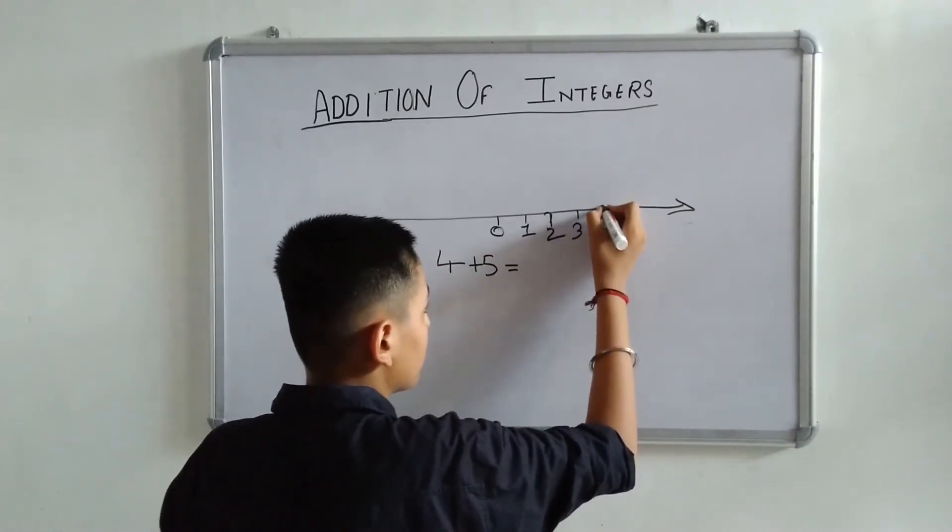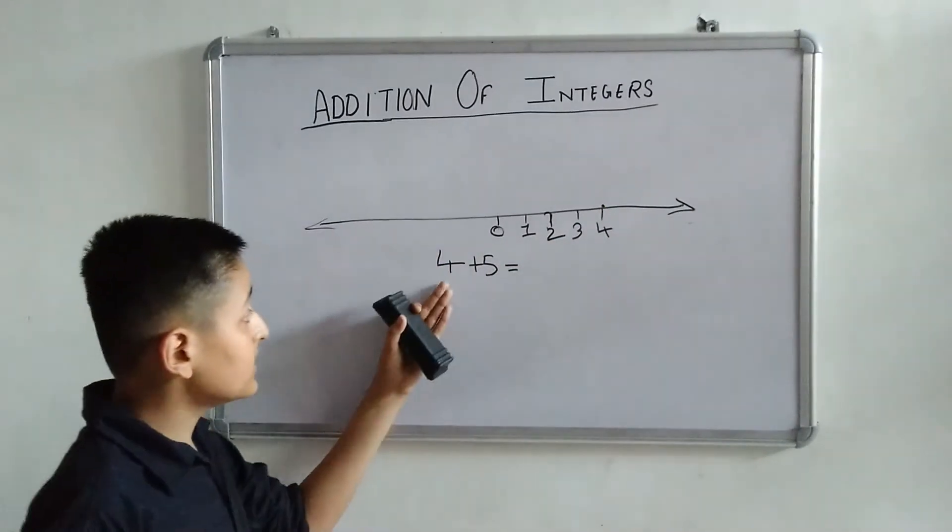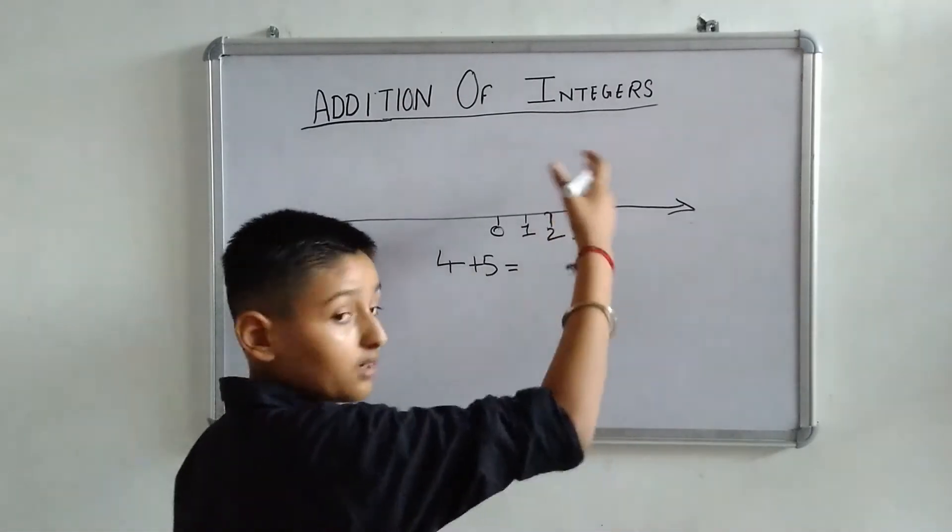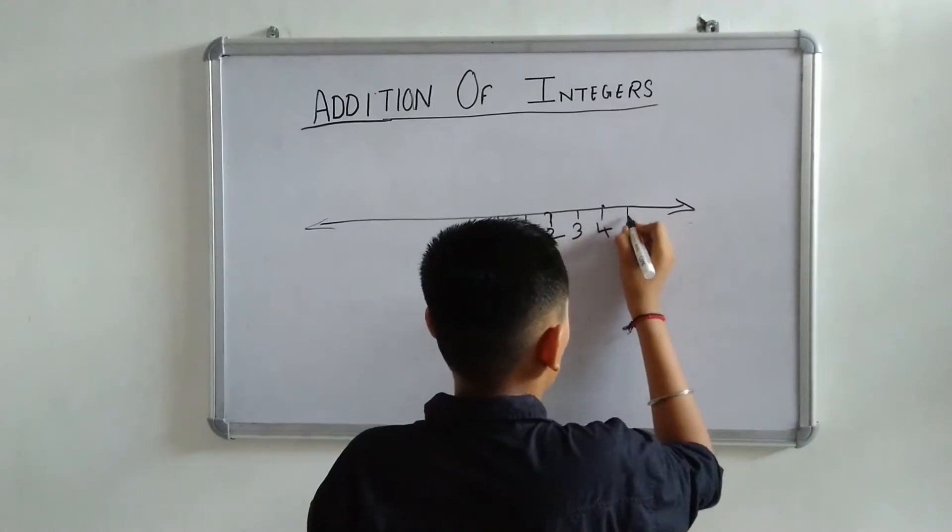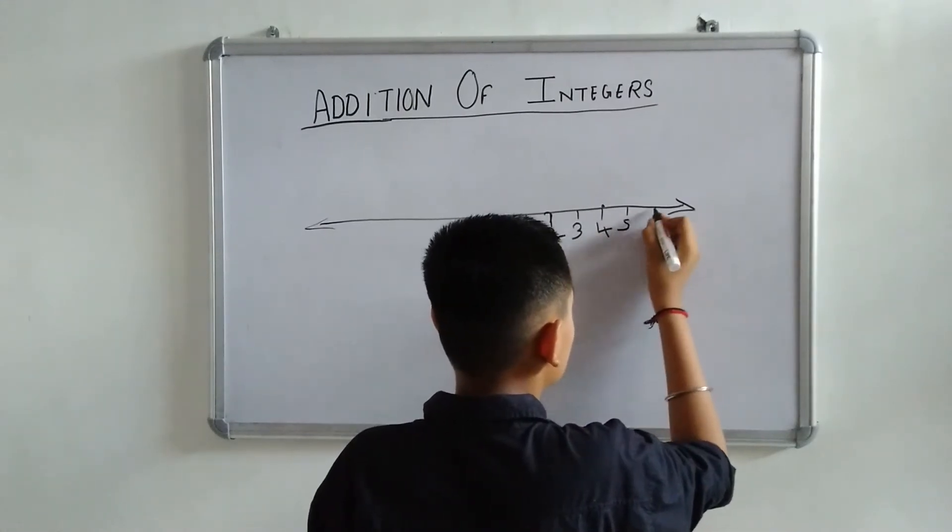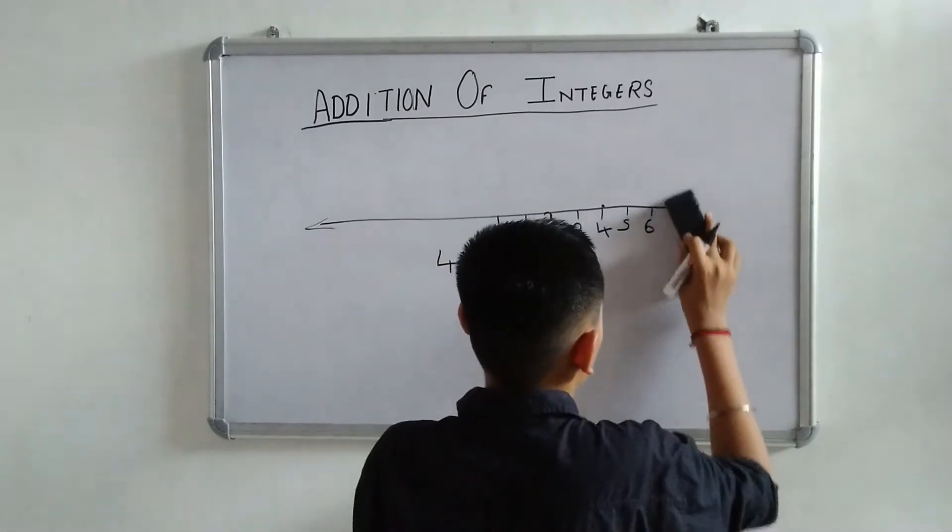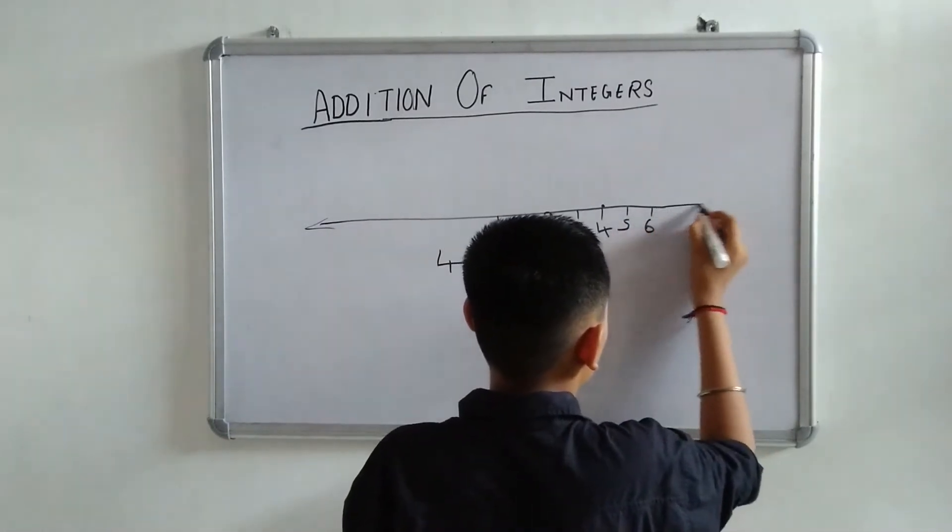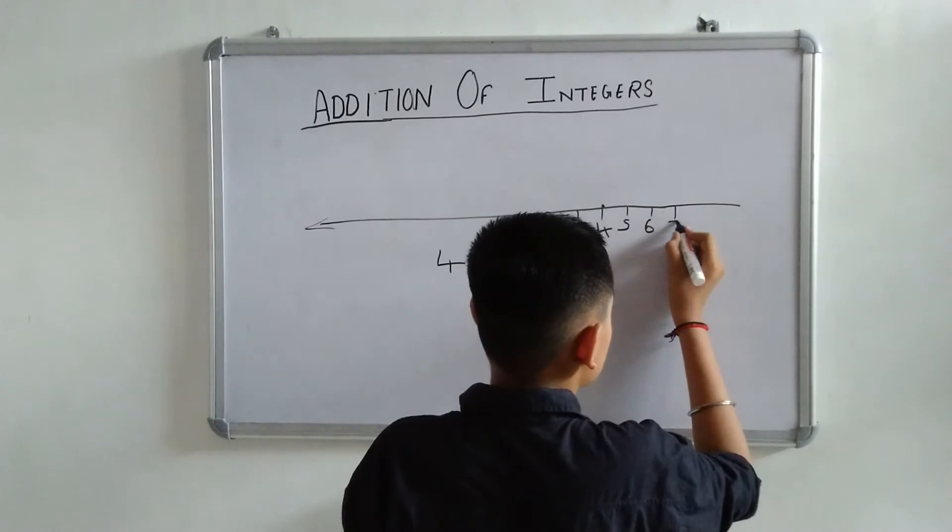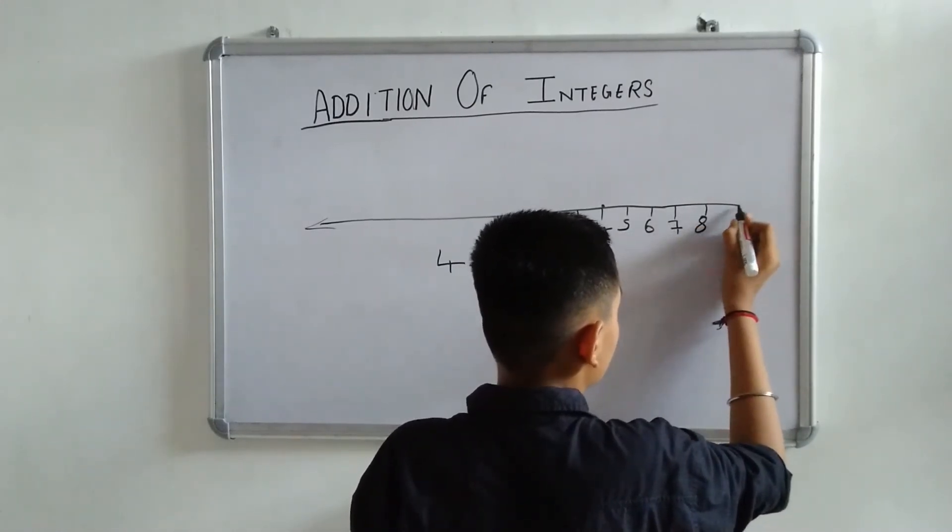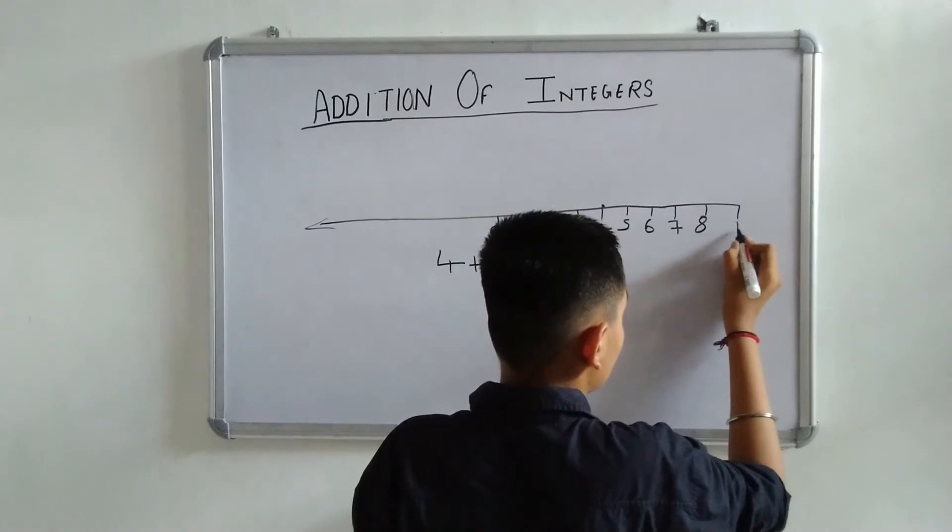This is our point 4. It said plus 5. We have to go on right-hand side, 5 steps more: 1 step, 2 step, 3 step, 4 step, 5 step.